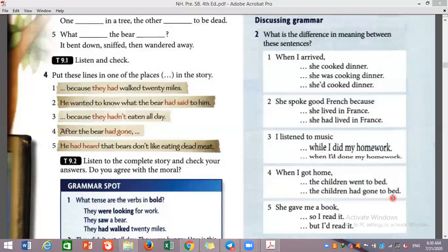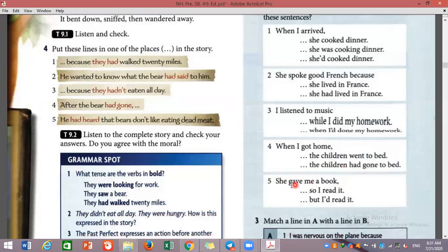The children had gone to bed. When I got home the children went to bed. She gave me a book so I read it. She gave me a book but I had read it. This is perfect, happened before past.